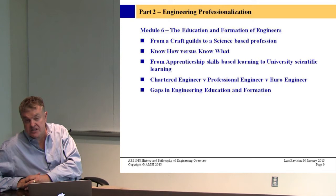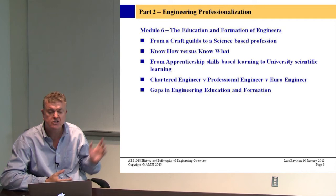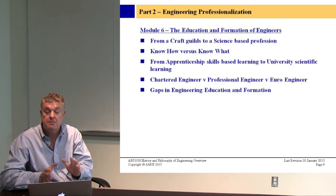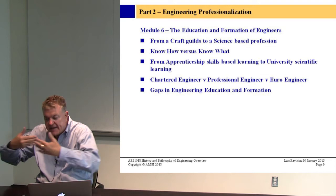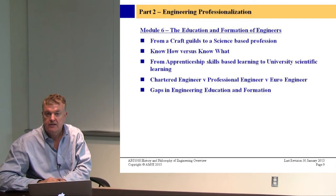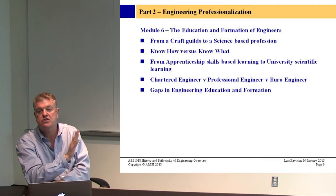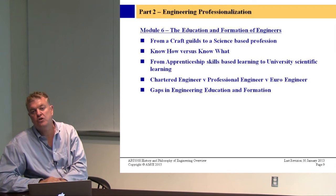Slide nine: education and formation of engineers, from craft guilds and medieval guilds in the 12th and 13th century to a science-based profession. In this module we'll drill down in great depth. We'll talk about know-how versus know-what. Know-how is the tacit knowledge that craftsmen pass on, while know-what and know-why bring a more scientific approach to engineering. We'll look at the implications of moving from five or six year apprenticeships to university training only.